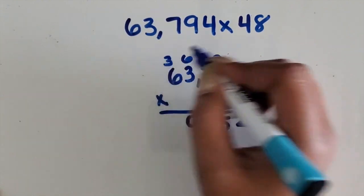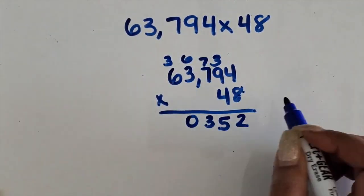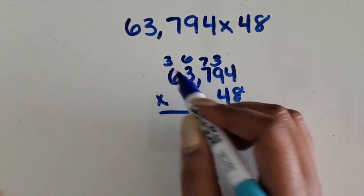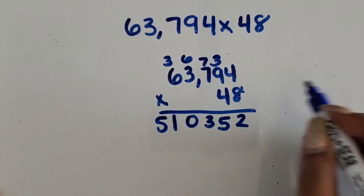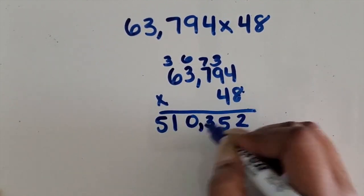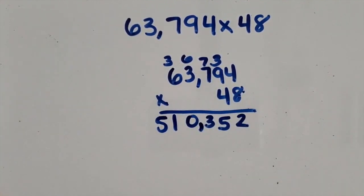Regroup the 3. 8 times 6 is 48 plus 3 is 51. Put my comma between the thousands and the hundreds.